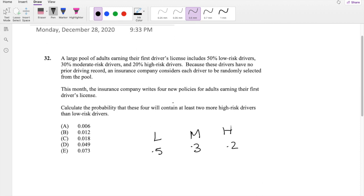So this month, they're issuing four new policies, so this is your N. And we're trying to find the probability that these four will contain at least two more high risk drivers than low risk drivers.